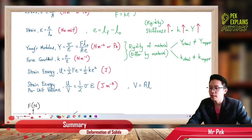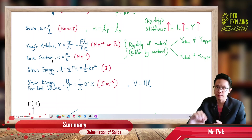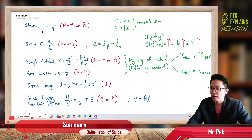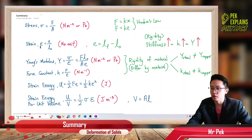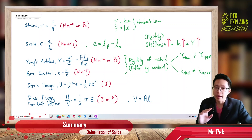Then we will learn something about Young's modulus and also force constant. Young's modulus and force constant are almost similar. Young's modulus is stress over strain. Just now we learned about stress, sigma, divide by strain, epsilon. When we substitute the formula for stress, F over A, and for strain, E over L0, then we will finally get FL over AE for Young's modulus.